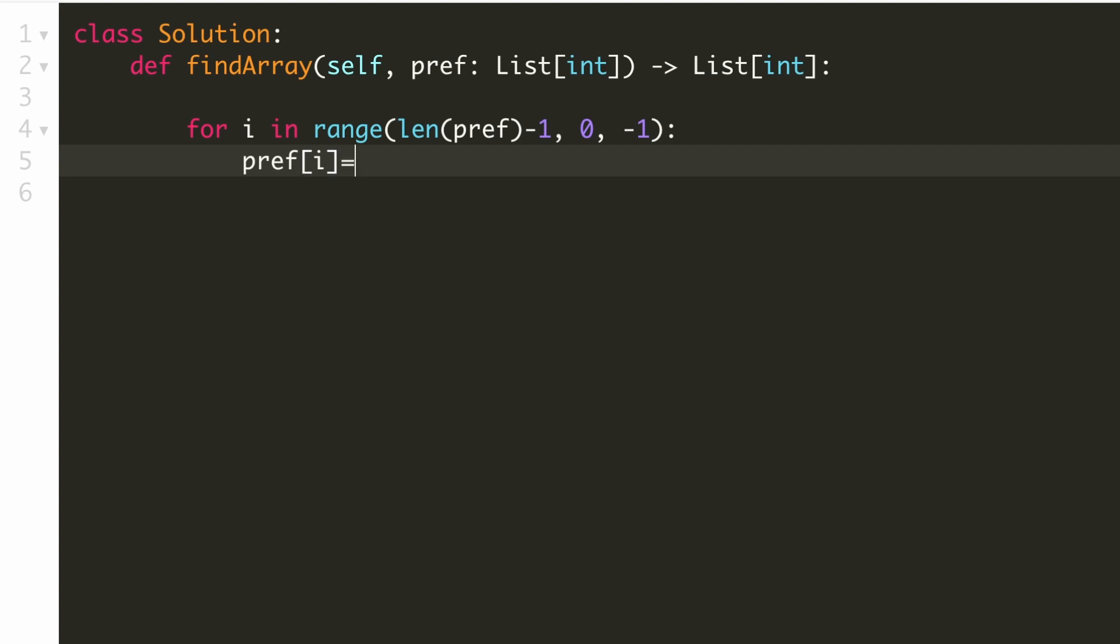Each element would be the xor of that element and the element to the left. The zeroth element in the array would not change and it will remain the same as the prefix array. We are done with the loop and now we can directly return our answer.